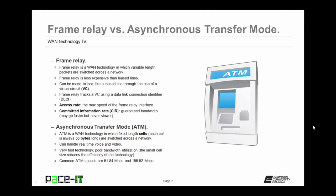The access rate may be higher, but the customer is always guaranteed the committed information rate. Now let's talk about asynchronous transfer mode, also known as ATM. ATM is a WAN technology in which fixed-length cells are switched across the network — these cells are always 53 bytes long. ATM can handle real-time voice and video because it's very fast, but it has poor bandwidth utilization. The small cell size reduces the efficiency of the technology, but ATM is very fast even if inefficient. Common speeds on an ATM network are 51.84 megabits per second and 155.52 megabits per second.